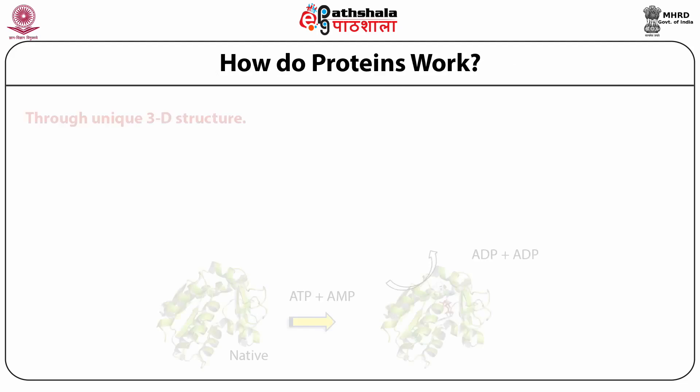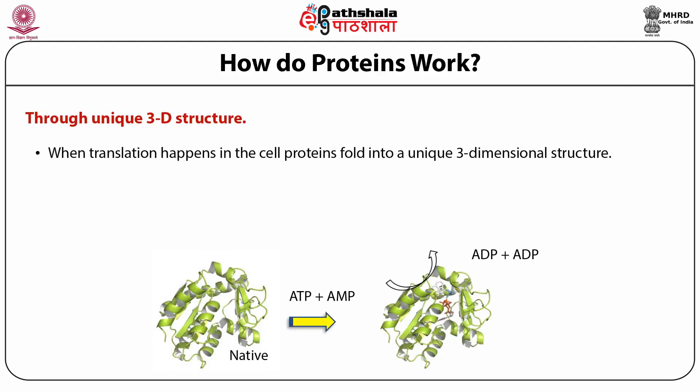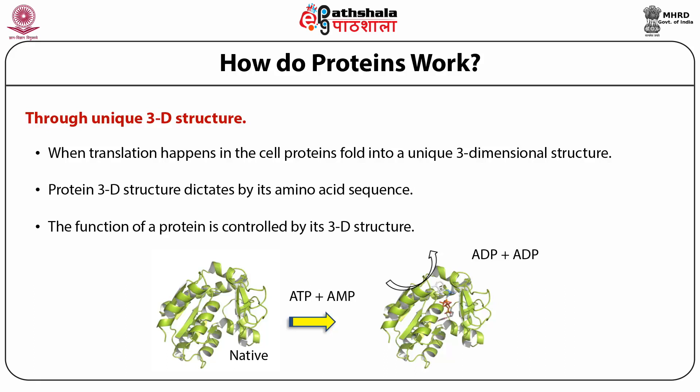How do proteins work? Proteins work through a unique 3D structure. When translation happens, the protein folds into a unique three-dimensional structure that mainly depends on the amino acid sequence, and the function of the protein is controlled by that 3D structure. In this slide you can see adenylate kinase: it takes one ATP and one AMP and converts them to two ADP molecules, maintaining ATP, AMP, and ADP concentrations in the cell. It has two catalytic binding sites and acts as a catalyst.